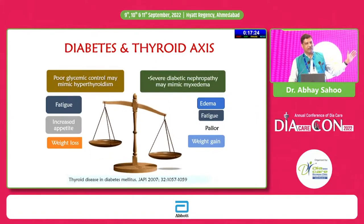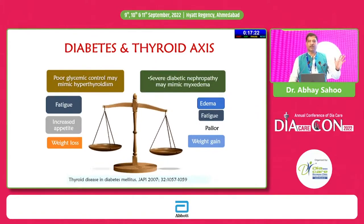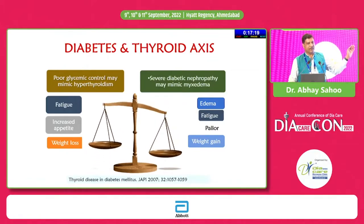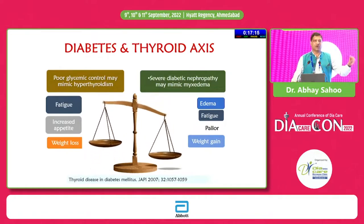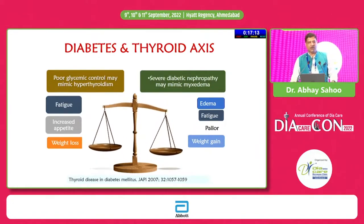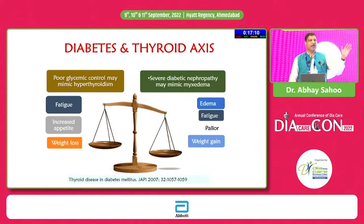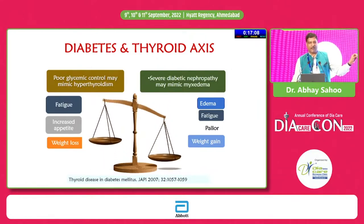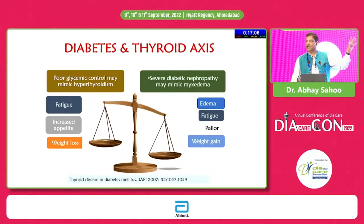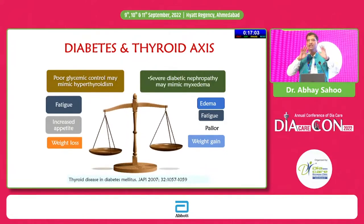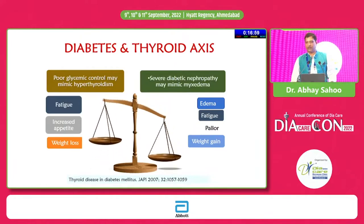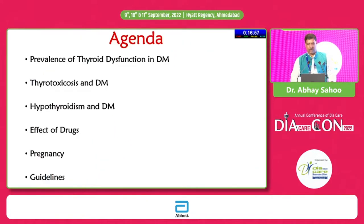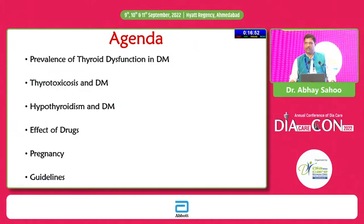If someone is having poor glycemic control, it can mimic hyperthyroidism — with fatigue, increased appetite, and weight loss mimicking thyrotoxicosis. Conversely, diabetic nephropathy might mimic myxedema, with edema, fatigue, pallor, and weight gain causing diagnostic confusion. With this background, we will discuss the prevalence of thyroid dysfunction among diabetes, risks of thyrotoxicosis, hypothyroidism in diabetes, drug effects, pregnancy-related issues, and guidelines.